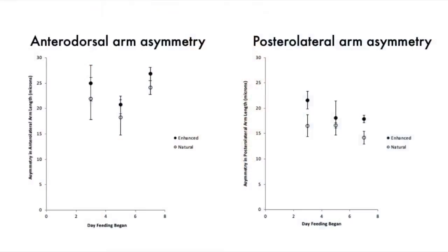I did not find any correlation between asymmetry and high and low food treatments, nor across the three, five, and seven day treatments. This indicates that there was no connection between fluctuating asymmetry and the food concentration and timing. However, the experience did allow me to perfect my image analysis skills for future research for my honors thesis. Thanks for listening.